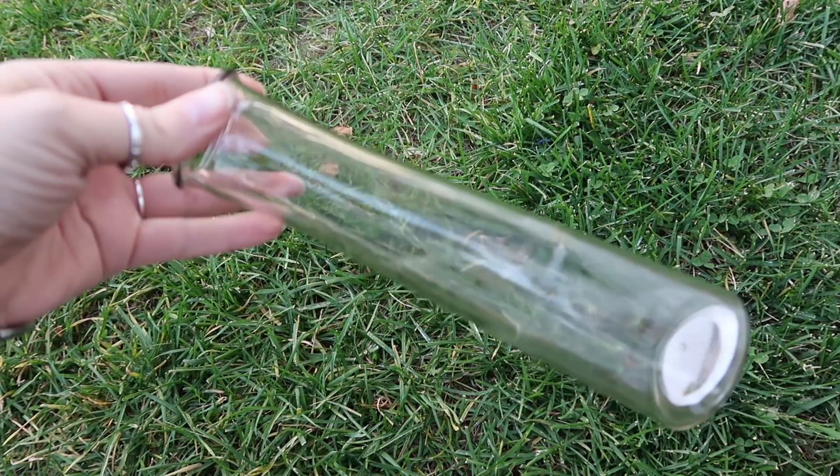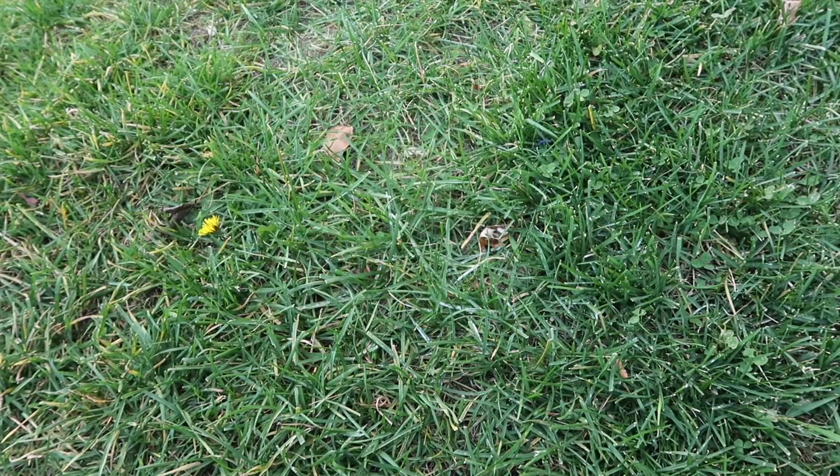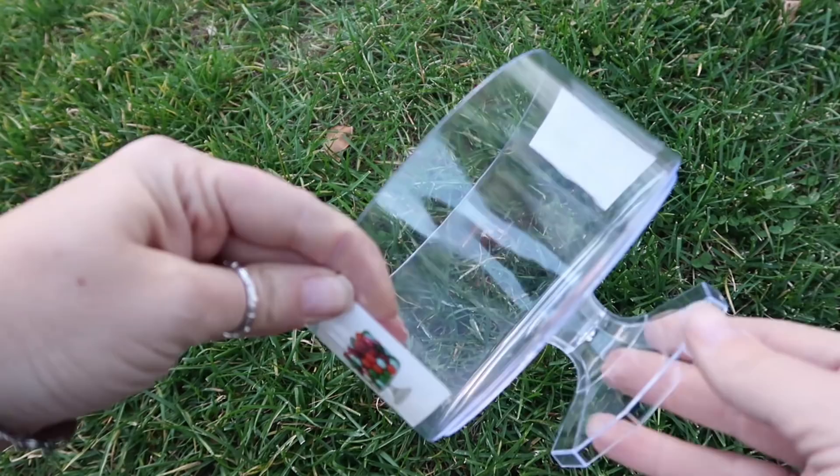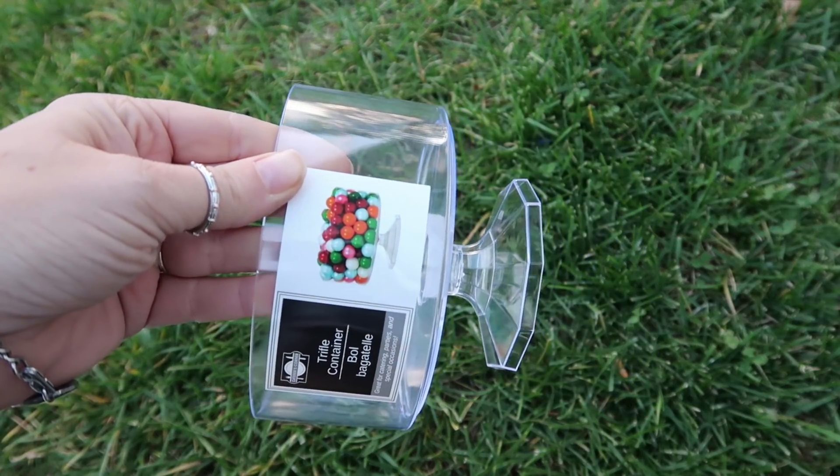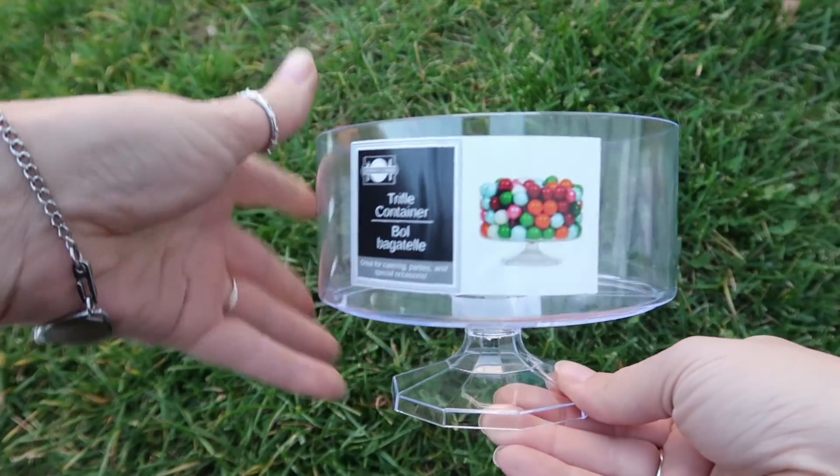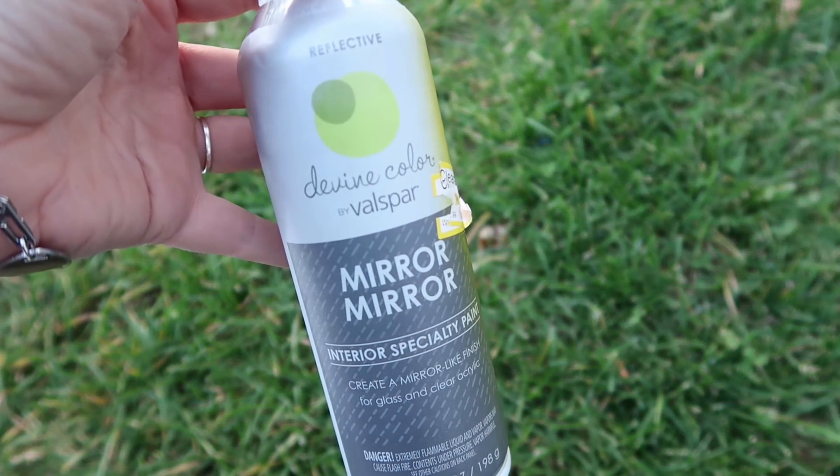We're going to be starting out in my yard. I'm going to be taking this glass vase from the Dollar Tree and this little candy dish from the Dollar Tree. You can use any containers that you have because we are just going to be using this mirror spray like I did in my last video.